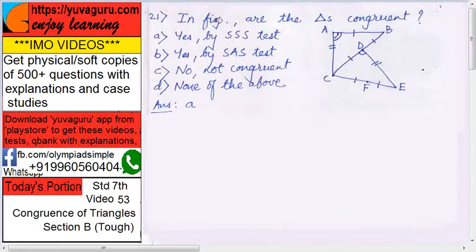In the given figure, are the triangles congruent, these two triangles? See this side is congruent to this side, this side is congruent to this side.